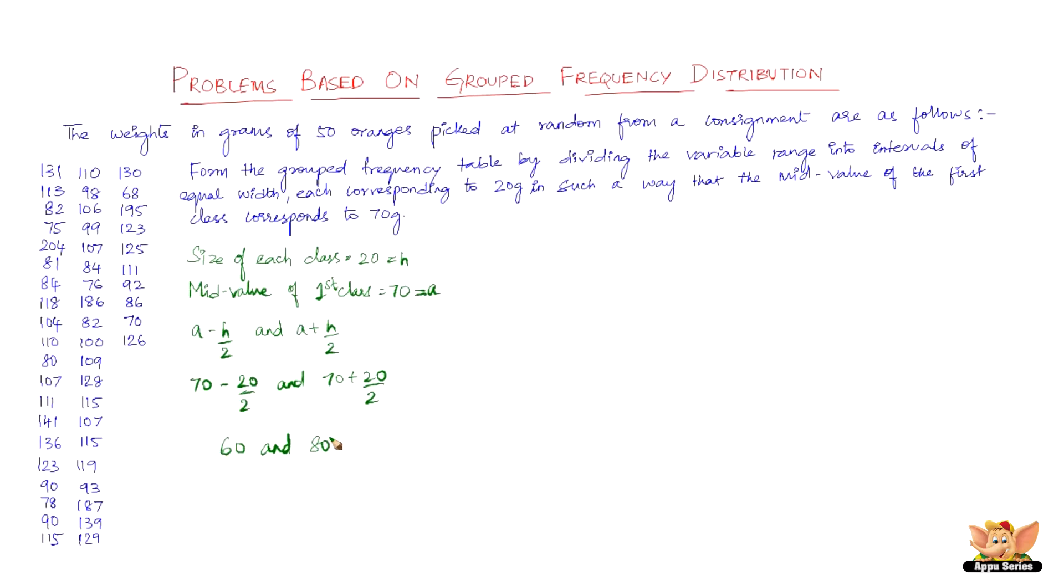So the lower and upper limits are 60 and 80, respectively. Therefore, the first class interval is 60 to 80. You can verify that the class size is 20 grams, and the mid-value is (60 + 80)/2 = 70, which matches what was given.